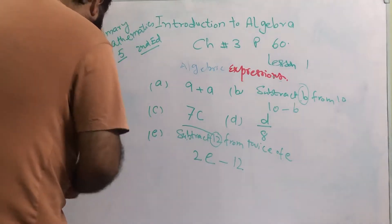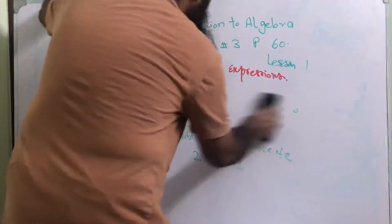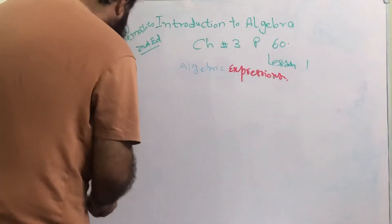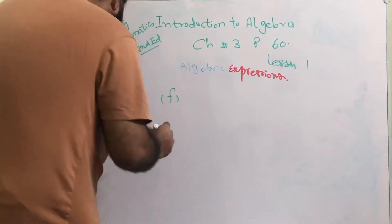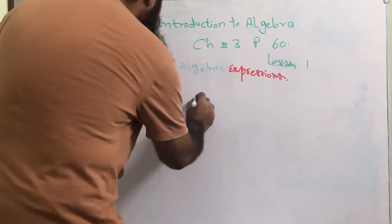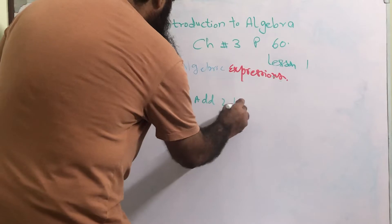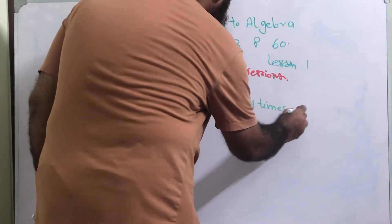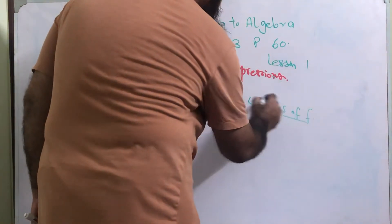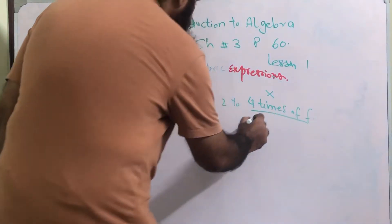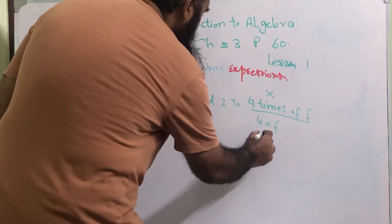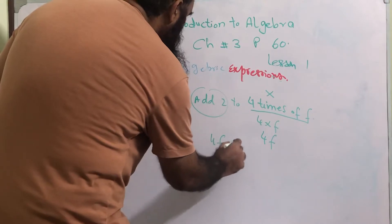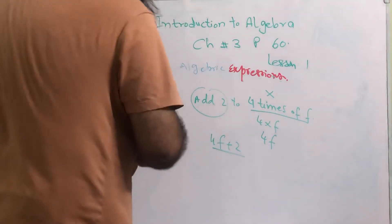Then part f: add 2 to 4 times of f. 4 times of f means 4 multiplied by f, which is 4f. So we need to add 2, and it becomes 4f plus 2. This is the algebraic expression for this part.